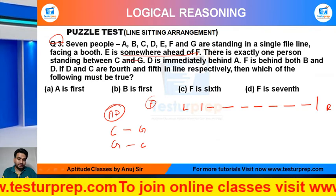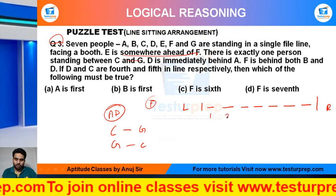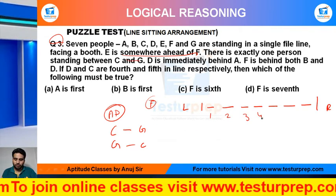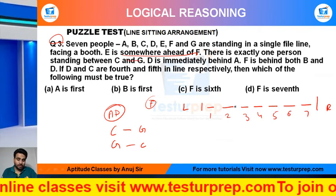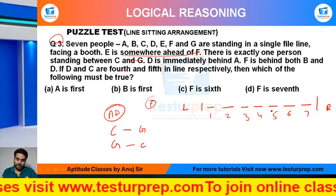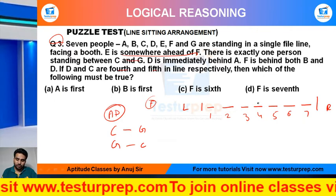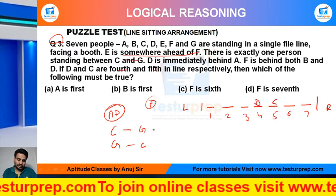If D and C are fourth and fifth position — yeh hai 1, 2, 3, 4, 5, 6, 7. Yeh hai bachho fourth and fifth pe D and C hai. Fourth and fifth pe D and C hai.